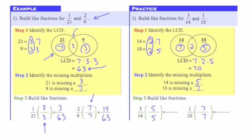For 10, the missing multiplier was 7. Now let's look at our new like fractions. The first one: 3 times 5 gives me 15, with a denominator of 70. In the second one, 1 times 7 gives me 7, with a denominator of 70. Now I have like fractions and I could go ahead and add or subtract.